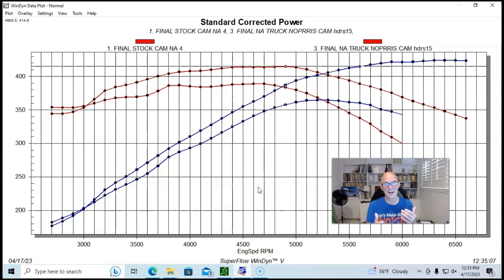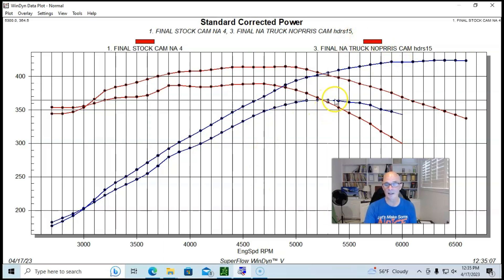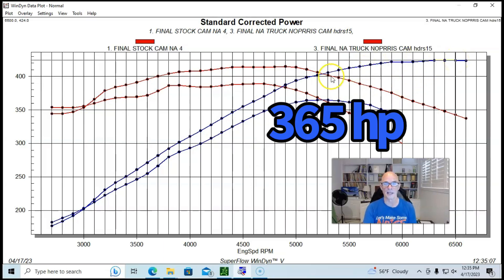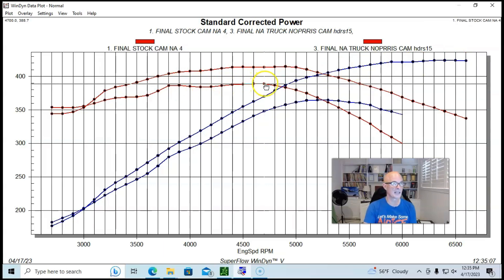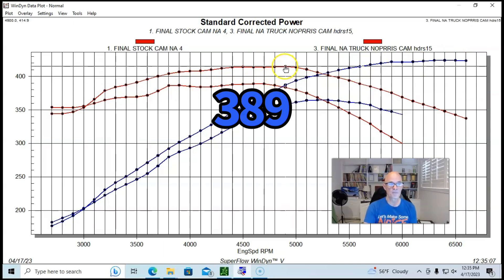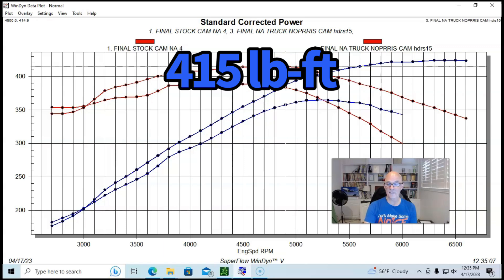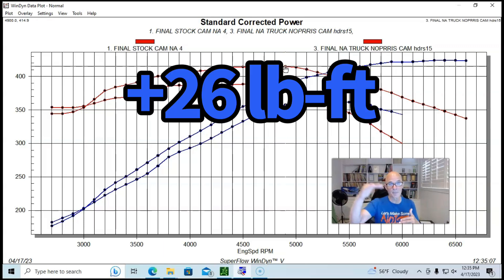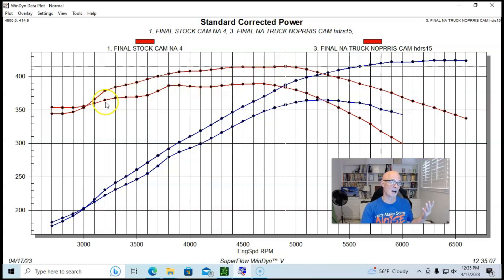The Truck Norris cam certainly picked up peak power, which we expect - 365 to 424, so big power gains. Picked up peak torque from 389 foot-pounds of torque up to 415 foot-pounds of torque. This thing offered more torque from 3,000 RPM all the way out, much better than the stock combination.